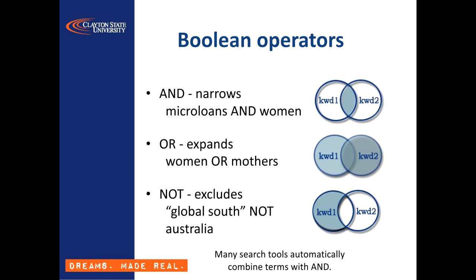Just as a side note, I want to point out how I put the phrase "Global South" in quotation marks here. That's because without the quotes, the search tool would convert it to an AND search — Global AND South — and return items that contain both of those terms anywhere in the record. By putting quotes around it, you're specifying that you want that exact multi-word phrase, and the computer treats it as a single unit rather than multiple separate words.